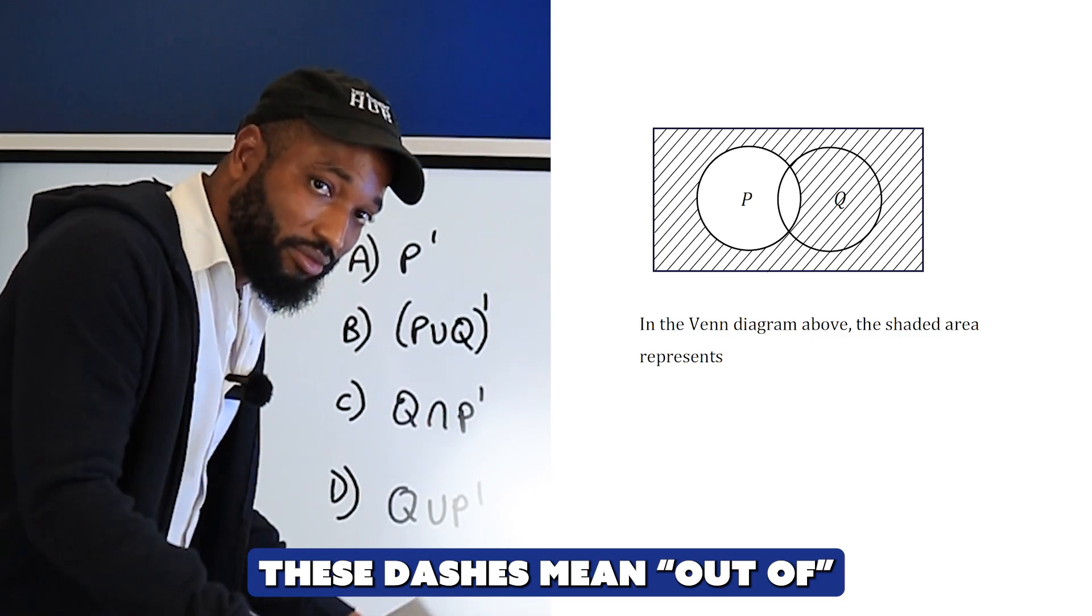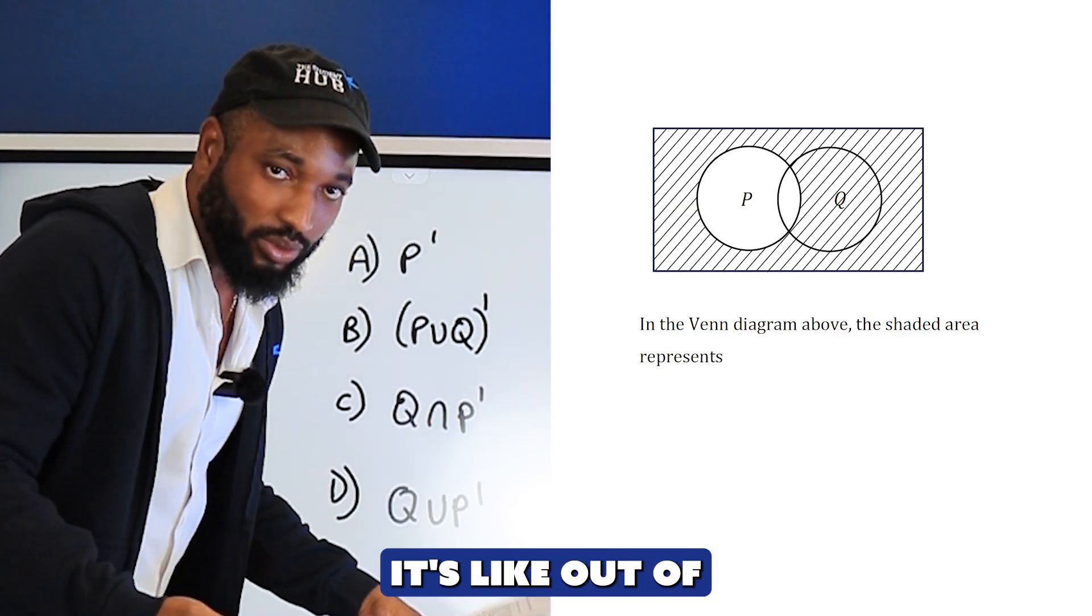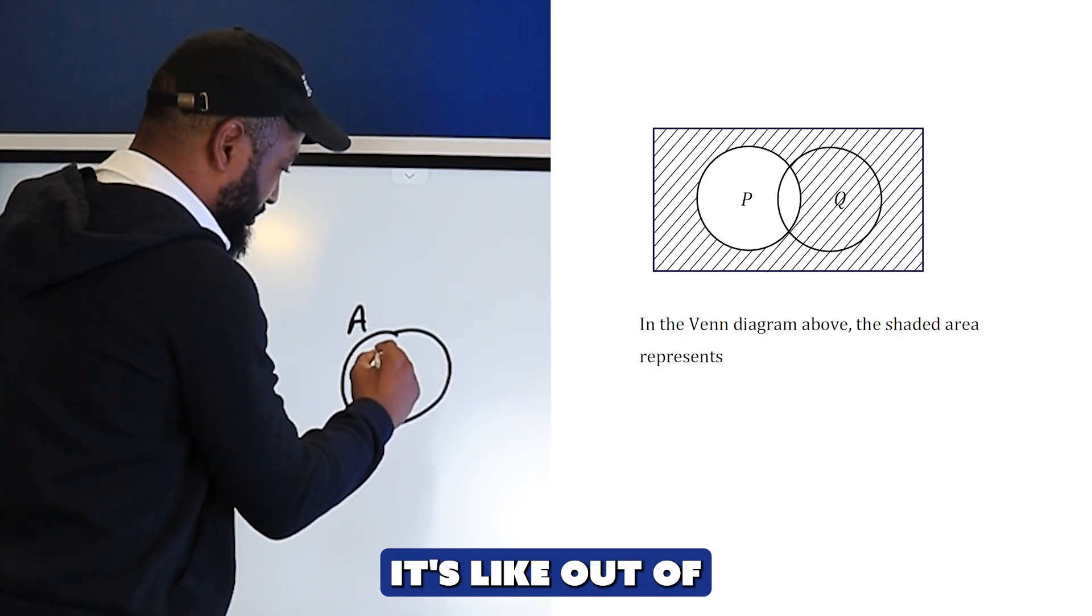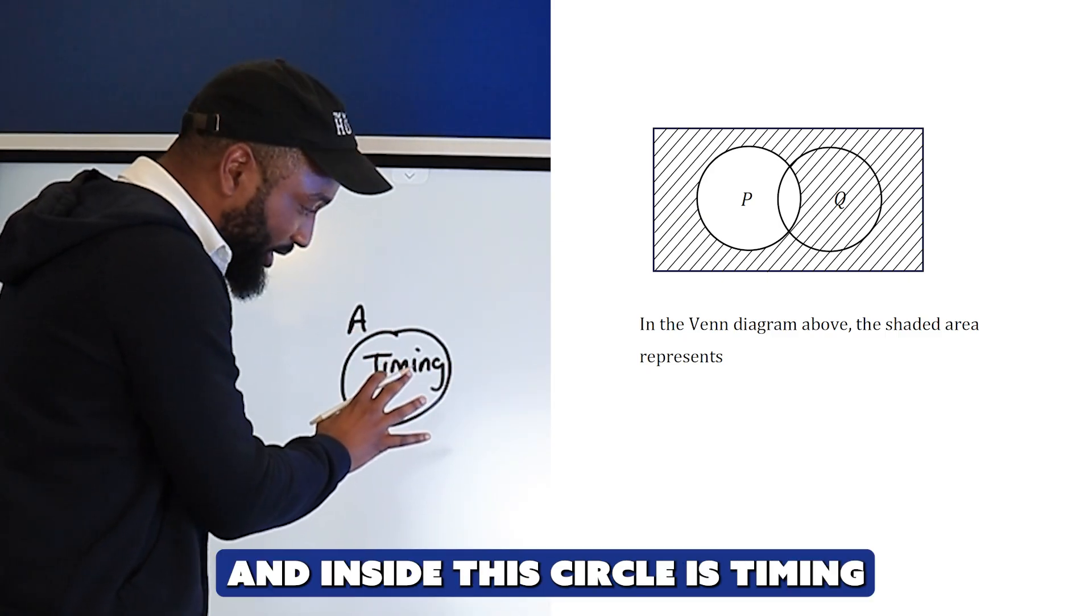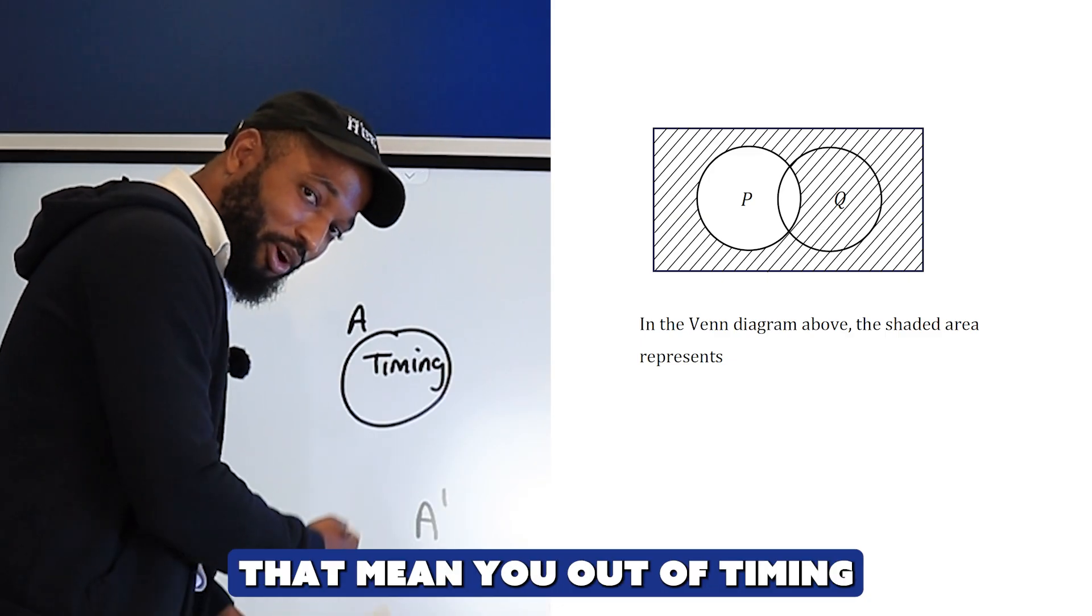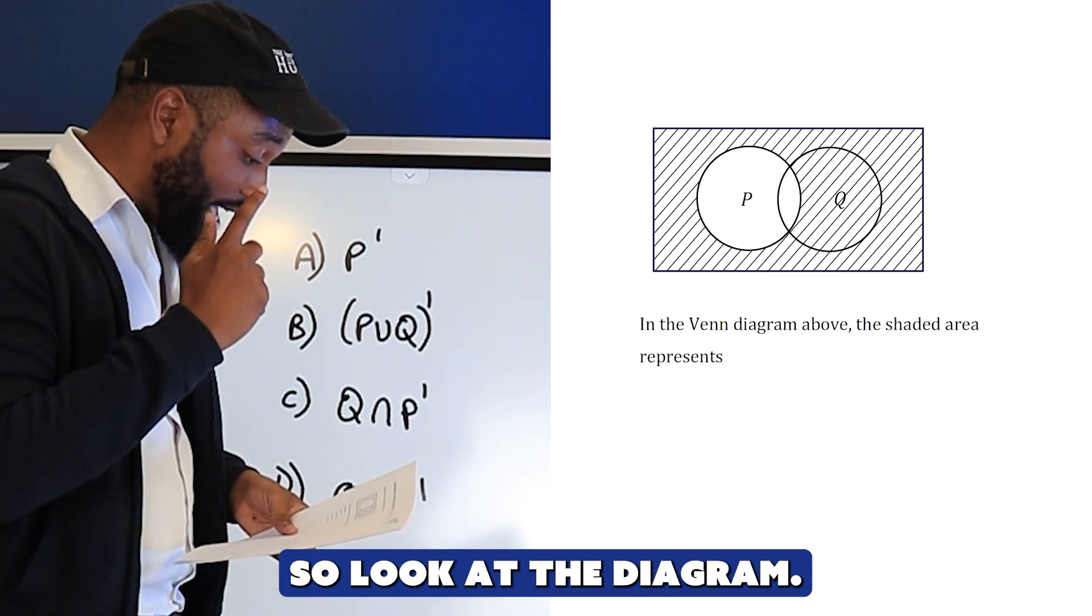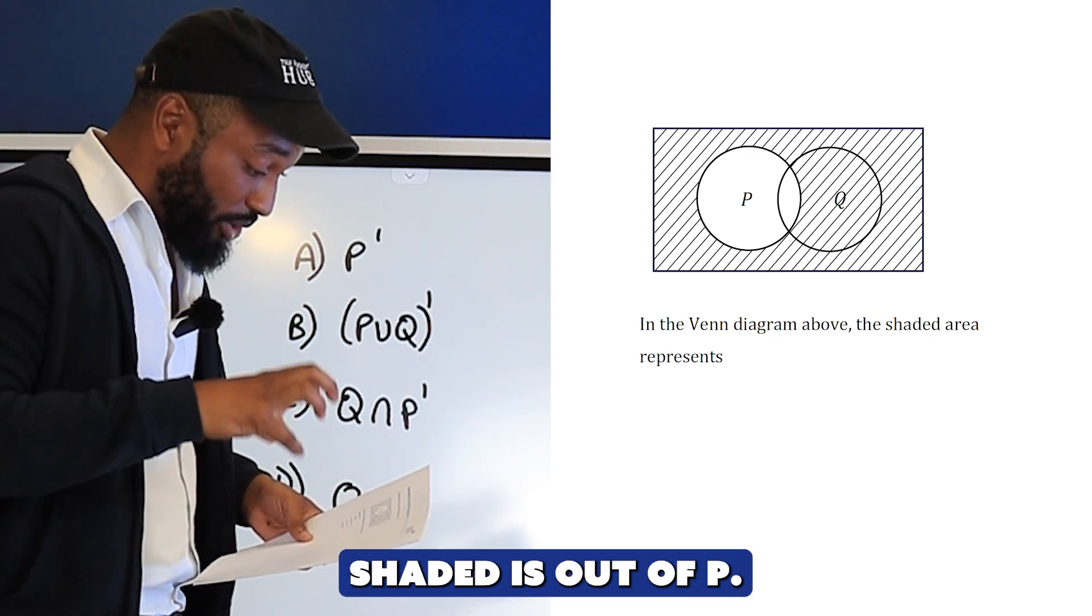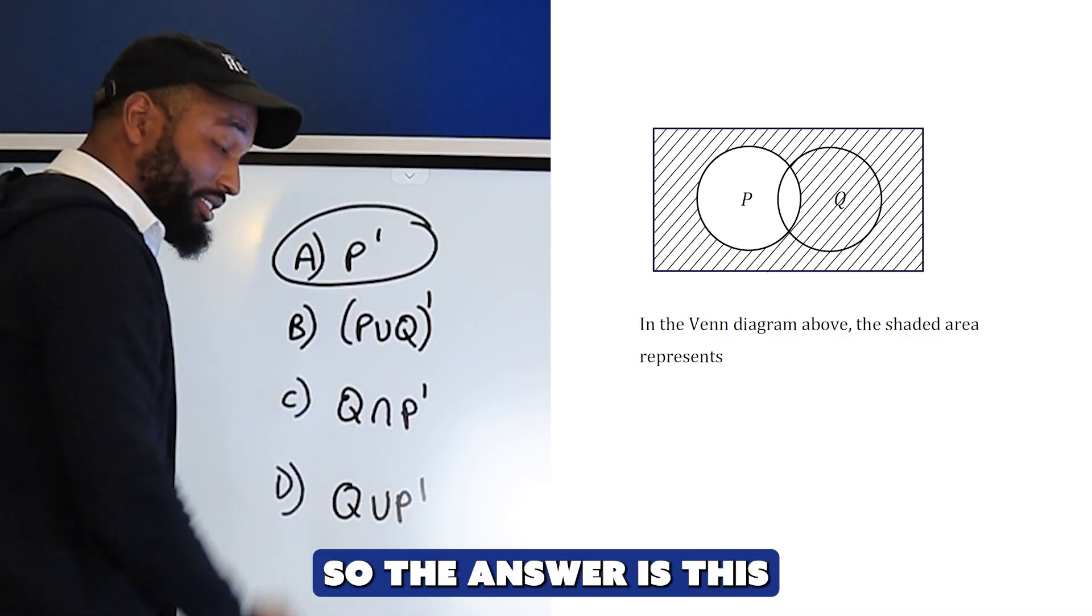If this circle is A and inside is P, then P complement means you're out of P. Look at the diagram - everything that's shaded is out of P. P complement. So the answer is P complement.